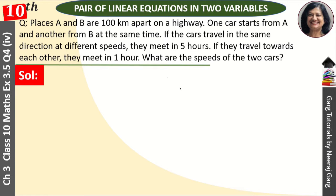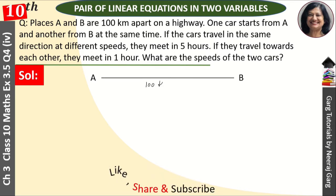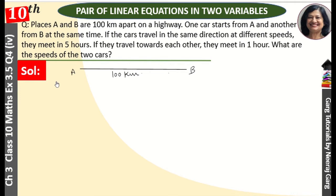Two places A and B are 100 km apart. One car starts from A at speed x km per hour, and the other starts from B at speed y km per hour.